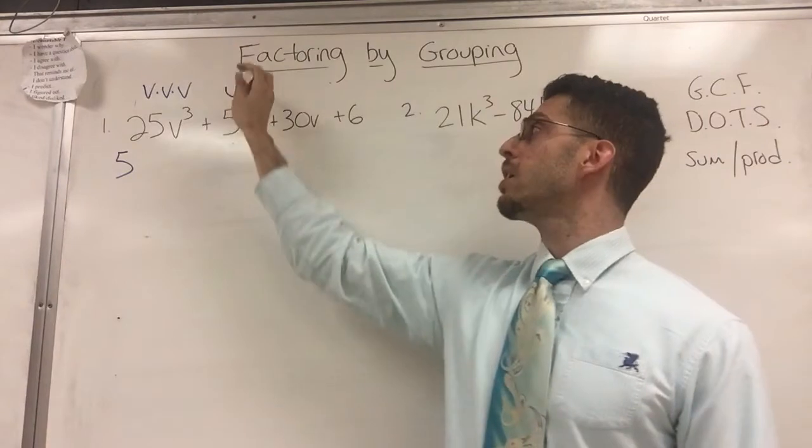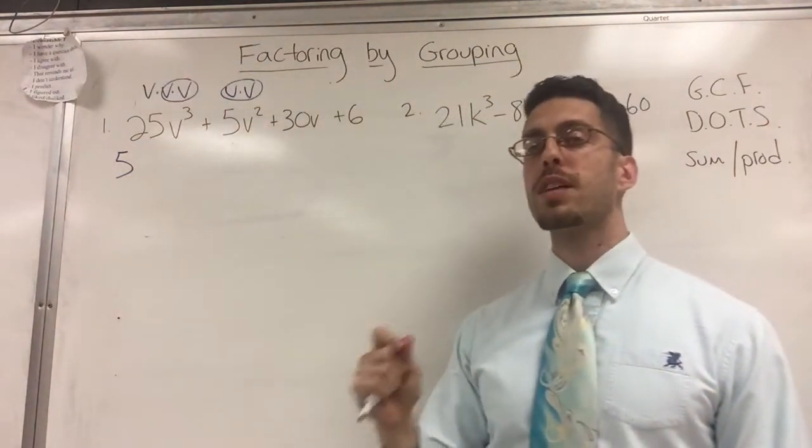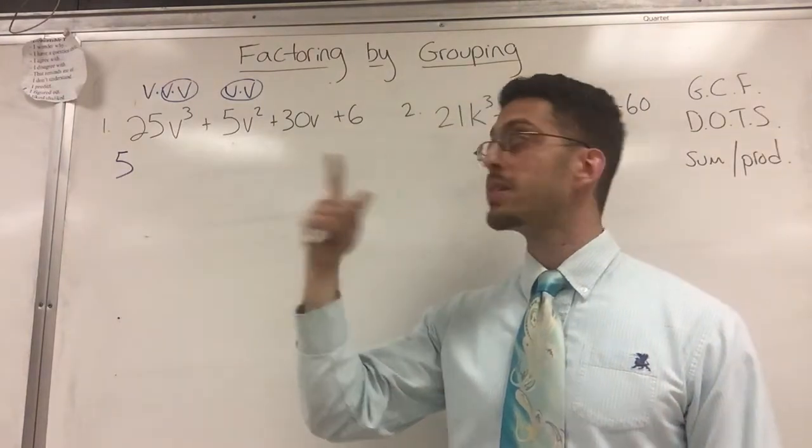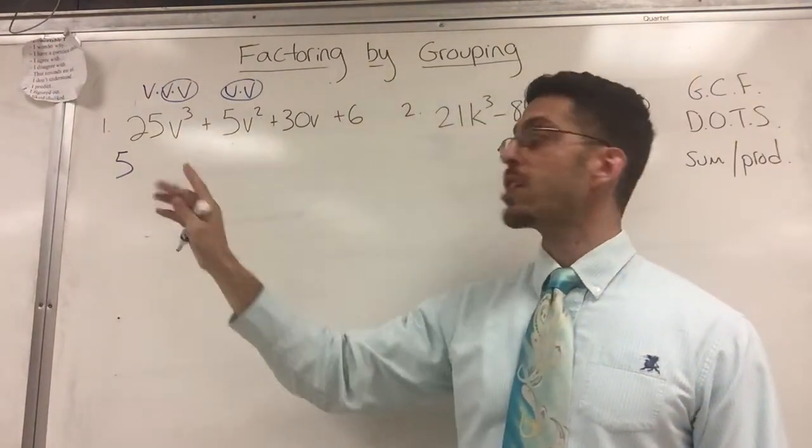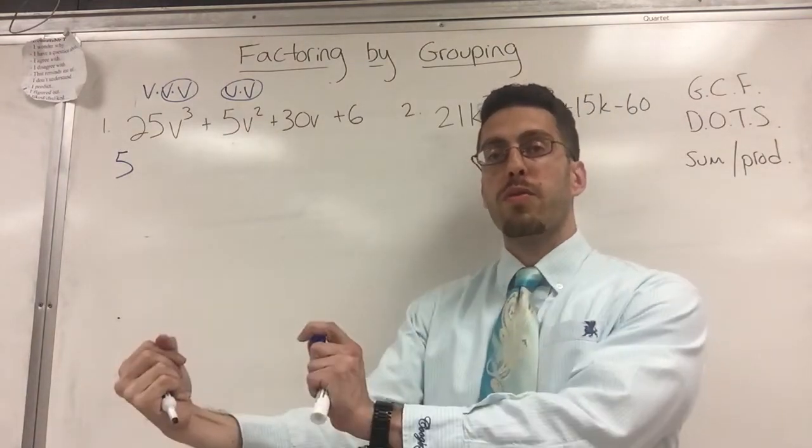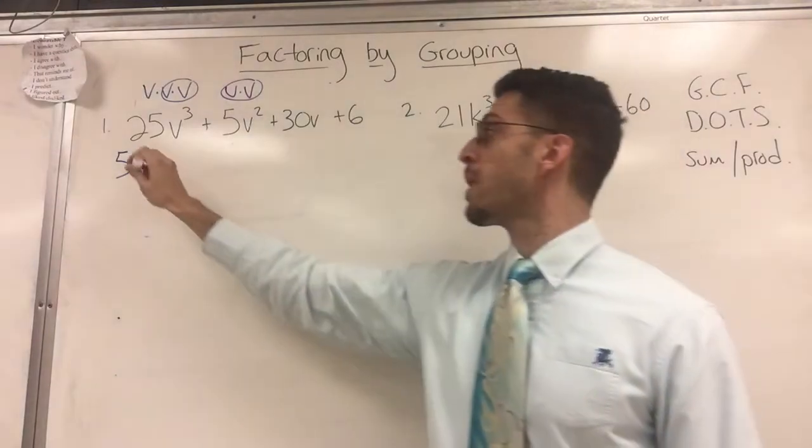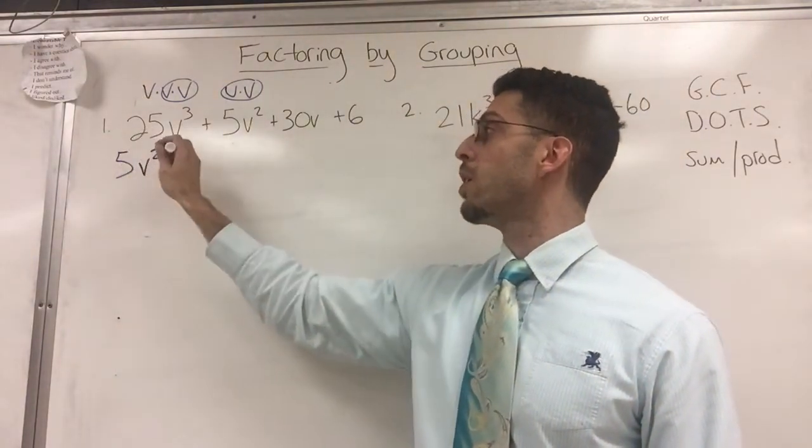What's in common? A couple of Vs here. A couple of Vs here. People hear greatest common factor, and they think, oh, let me take the biggest exponent. It's actually the smaller of the two exponents because you can only take out V² from both. You can't take out V³ from both because there's no V³ here. So this is V².